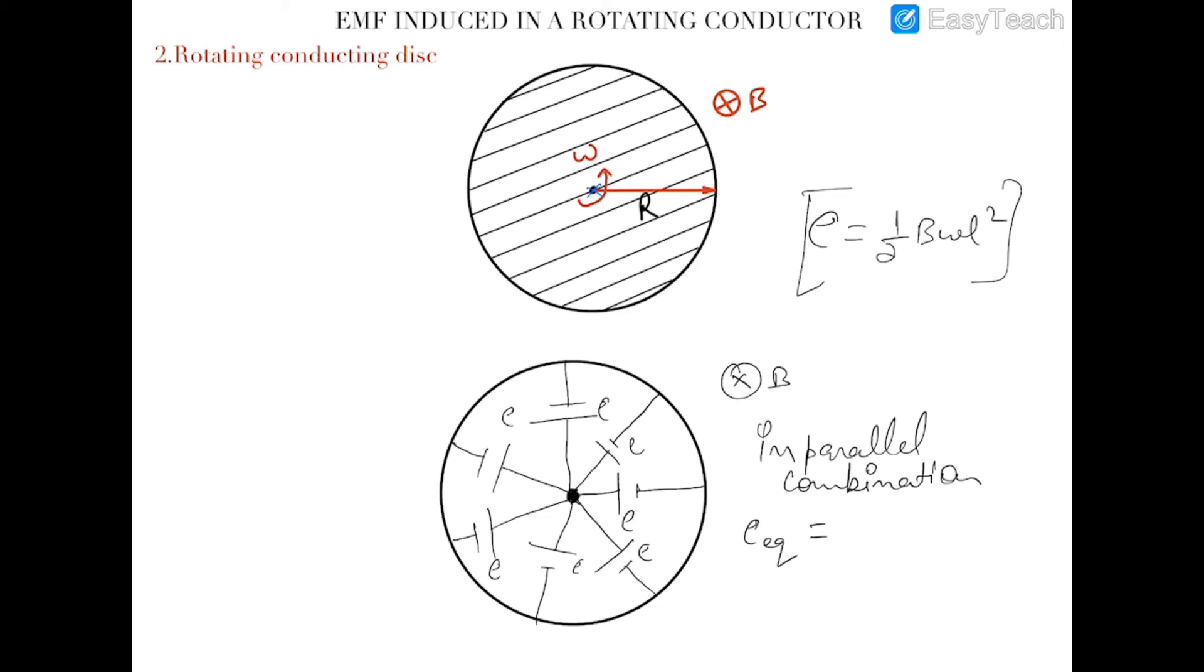So the total EMF induced in this disc would be half b omega l square whose positive terminal would be at the center of the disc and negative terminal would be at the periphery of the disc. Thank you.